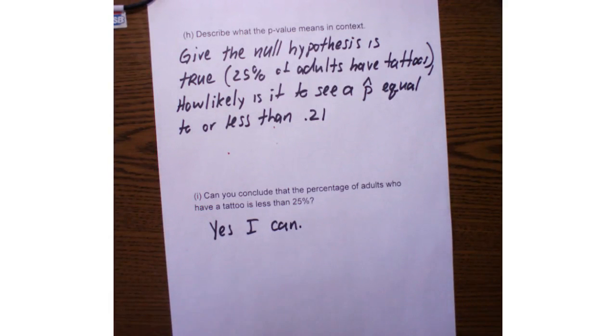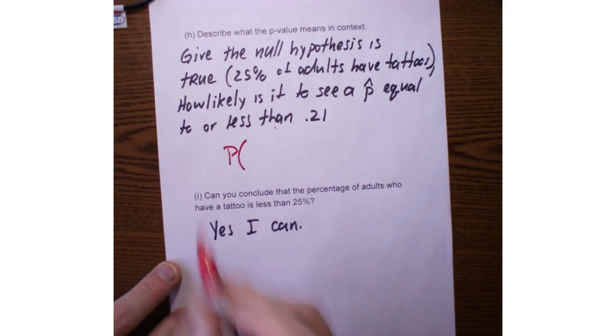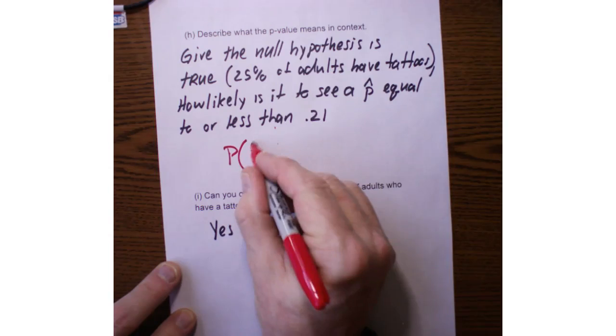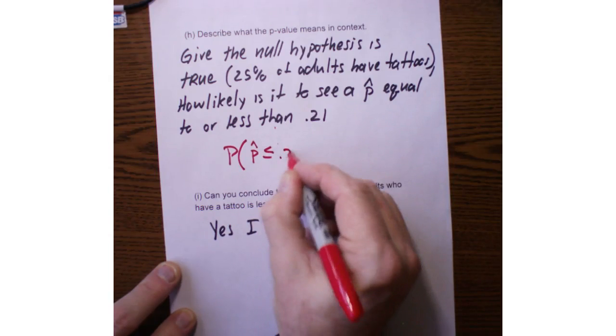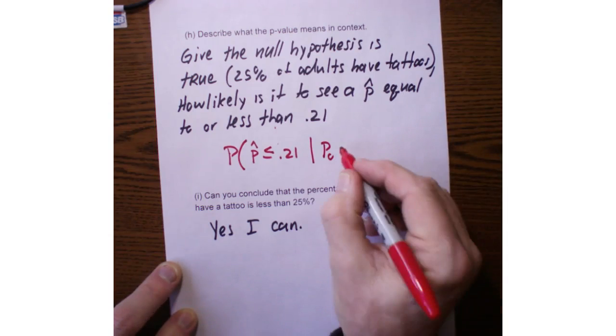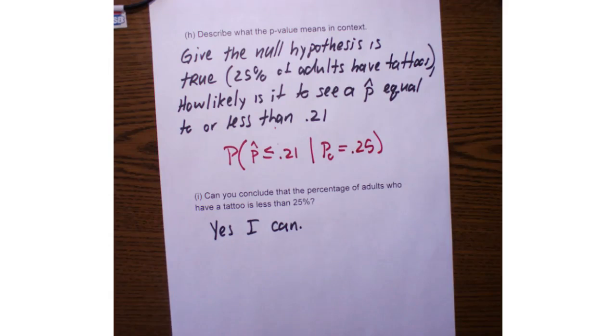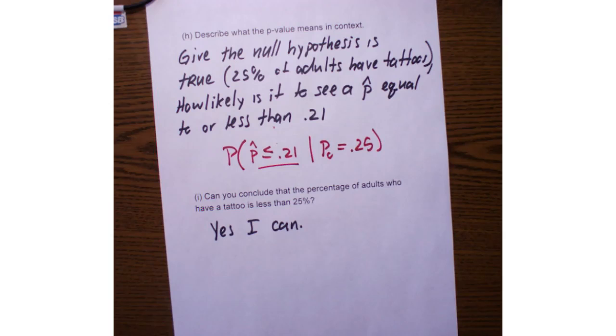So describe what the P value means in context. Remember, the P value is a conditional probability. So the probability that a P hat would be less than or equal to 0.21, given that the true proportion, the null proportion, is equal to 0.25. So given the null hypothesis is true, in other words, 25% of adults have tattoos, how likely is it to see a P hat equal to or less than 0.21?